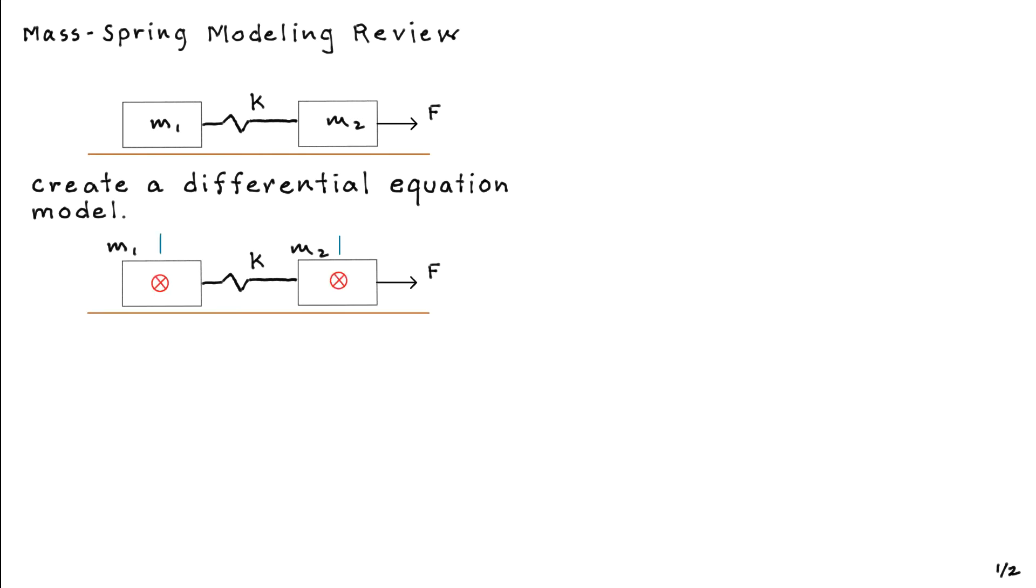So here's one of the first steps that most of you would have done if you've attacked this sort of problem before. You redraw the picture, maybe define some reference points for the blocks, in this case some red center of masses, and then you apply some variables of motion or generalized coordinates. Here I've denoted those as x1 and x2, moving positive to the right.